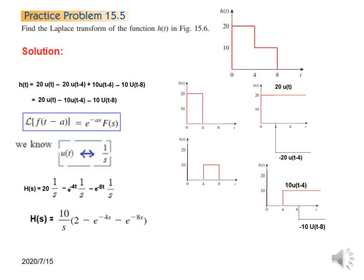If you feel more comfortable, you could also represent it in one graph. 20u(t) is going, then at t equal to 4 we drop by 10 and continue. At t equal to 8 we further drop by 10. In our case the answer will be the sum of the three: 20u(t) minus 10u(t minus 4) minus 10u(t minus 8). This is the same formula and same answer as before.